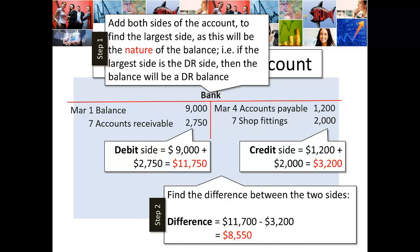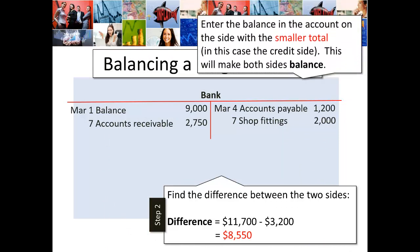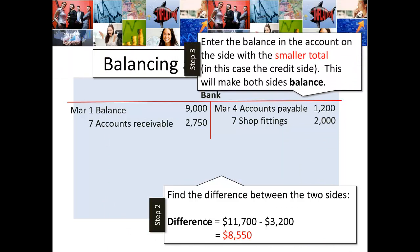Step two: find the difference between the two sides. $11,750 subtract $3,200 — the difference between the debit and credit side will be the balance. Step three: enter the balance in the account on the side with the smaller total. In the case of the bank account, this is going to be the credit side, and that's going to make both sides balance.